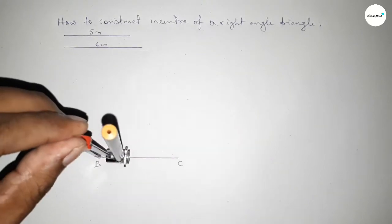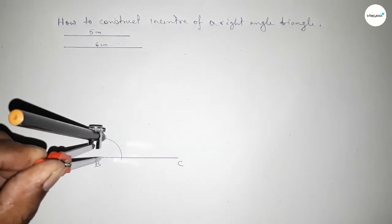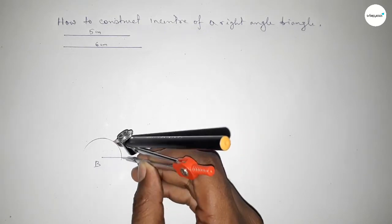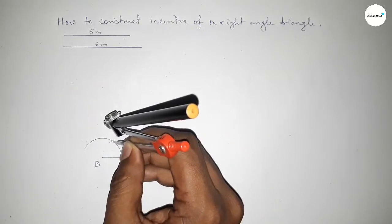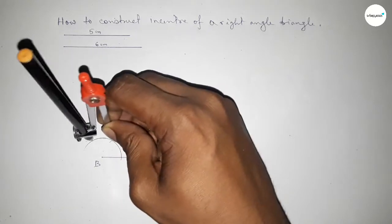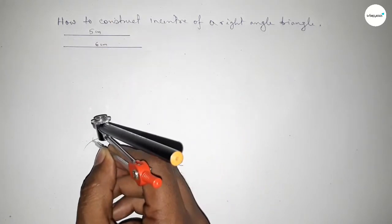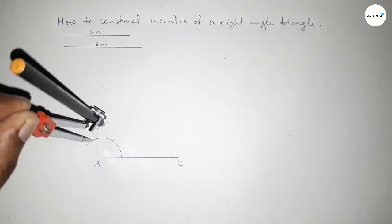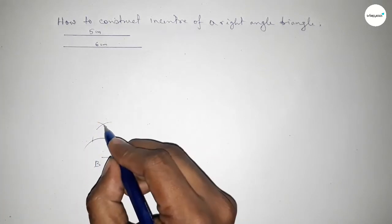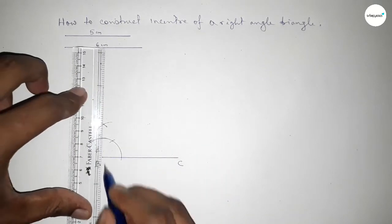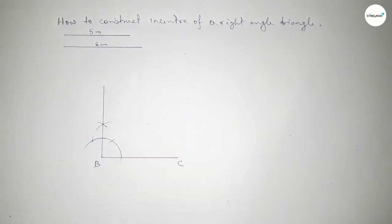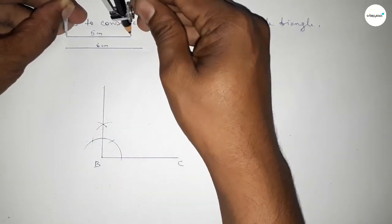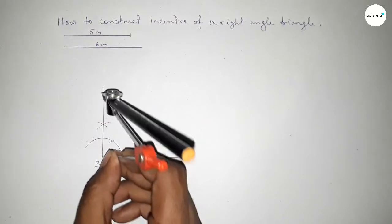Now drawing a 90 degree angle at point B. Putting the compass on point B, taking any length, and drawing an arc. With the same length, putting the compass here and cutting here, then putting the compass here and cutting here, and drawing an arc with the same length. Both curves intersect at a point, so joining this line to get 90 degrees.